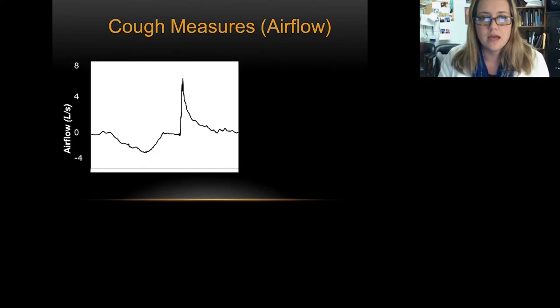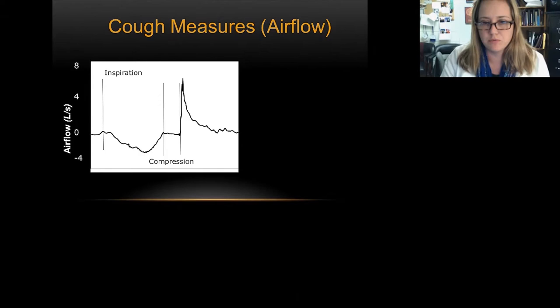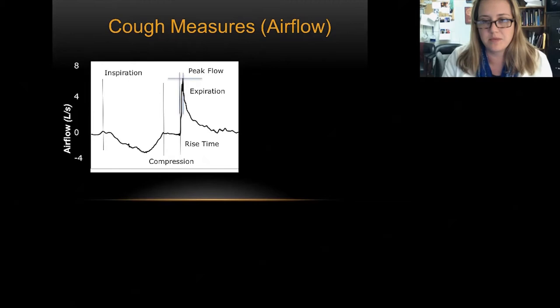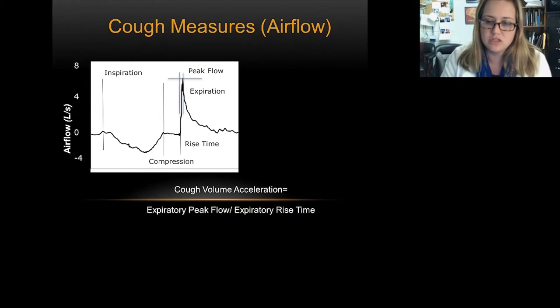We take cough measures and look classically at the inspiration, compression, and expiration phase. We're interested in the maximum peak flow produced, the time it takes to get to that maximum peak flow, and something called cough volume acceleration, which is peak flow over the rise time. This gives us a metric of how effective a cough actually is.